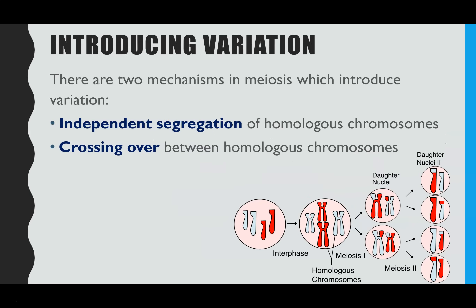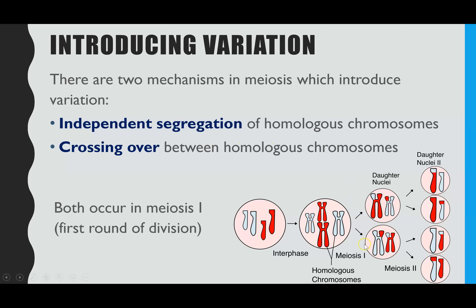There are two mechanisms that occur to introduce variation. Firstly, independent segregation of the homologous chromosomes, and secondly, crossing over between the homologous chromosomes. Both of these happen in the first division of meiosis — in meiosis one — between the parent cell stage and the creation of the two daughter cells.